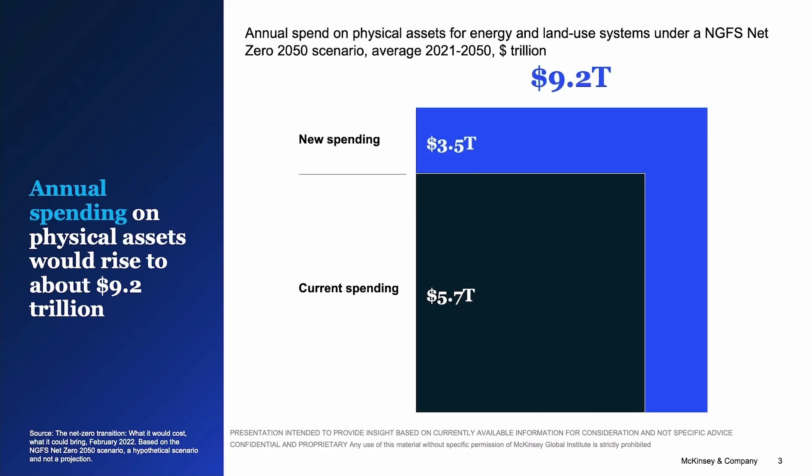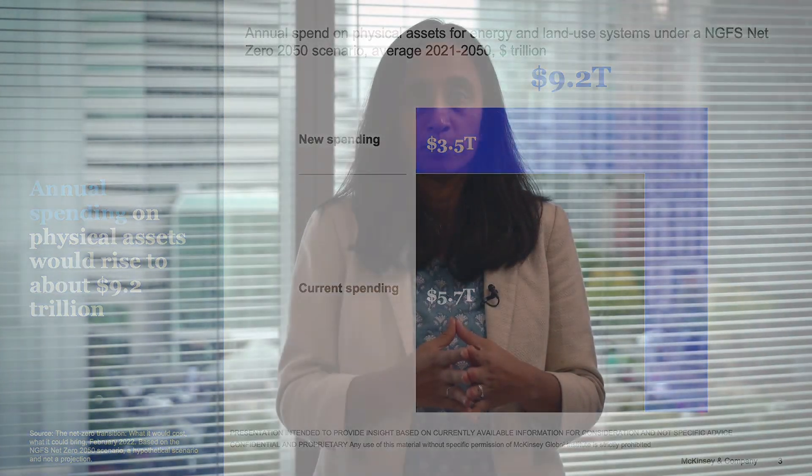That's an increase of $3.5 trillion relative to today's spend every year that we will need on average for the next 30 years. Of course, as we look ahead over the next 30 years, economies grow, populations grow, and certain policies that governments have already committed to will drive some increase in spending. Even accounting for that, the yearly step-up of spend on physical assets would be about $1 trillion — lower than the $3.5 trillion, but still substantial. It's important to remember that we will be deploying capital at substantial scale to support this transition.